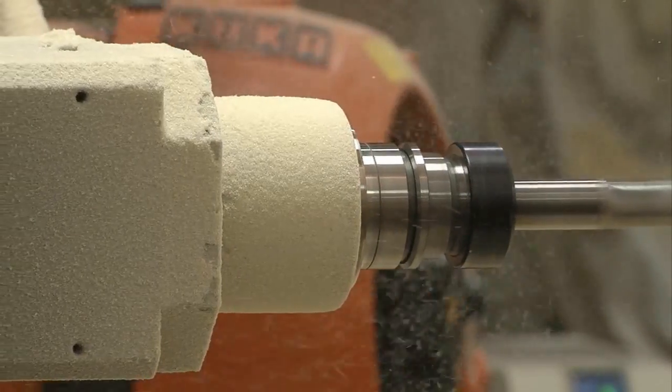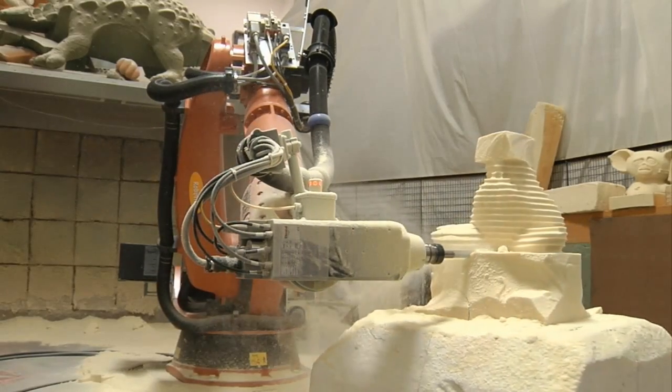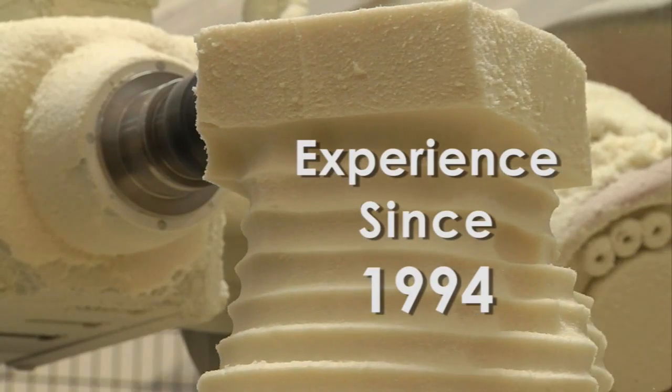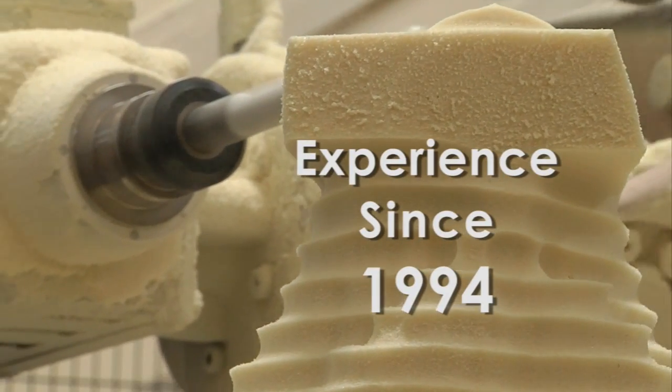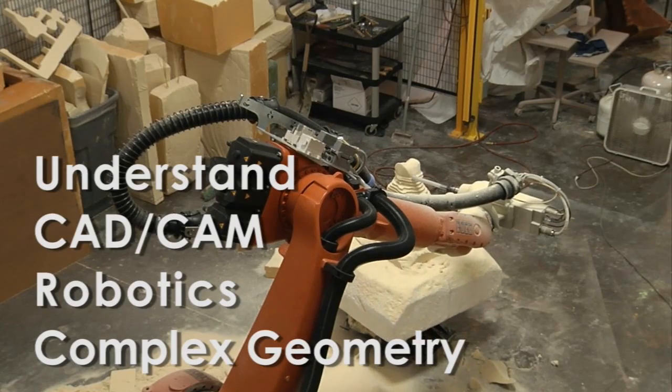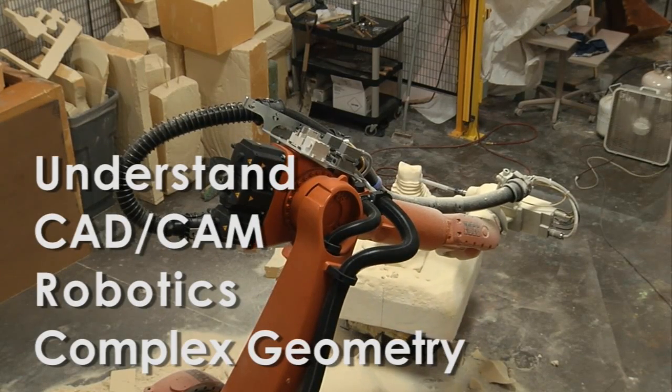Any company can simply slap a spindle on a robot. So what makes Robotic Solutions different and better than the rest? First, we've been doing this since 1994. We've worked out all the kinks in robotic milling. We understand CAD-CAM, robotics, and the complex geometry it takes to make them all work together.